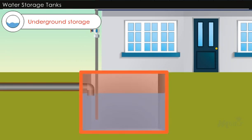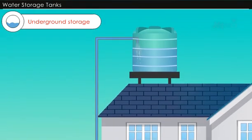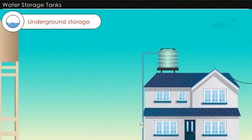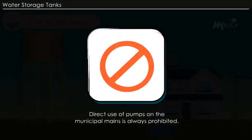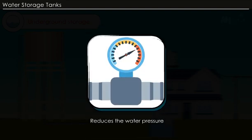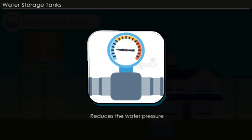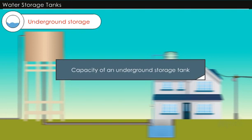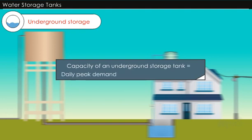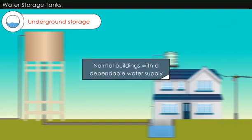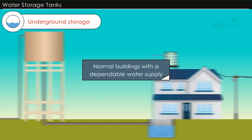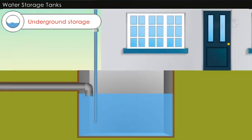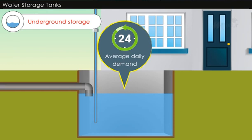The water collected in the underground tank is then pumped up to the overhead tank. Direct use of pumps on the municipal mains is always prohibited by municipal authorities, as it reduces the water pressure in adjoining houses or buildings. The capacity of an underground storage tank should be the net difference between the daily peak demand and the flow during hours of supply. For normal buildings with a dependable water supply, underground storage capacity is taken at 12 to 24 hours of average daily demand.